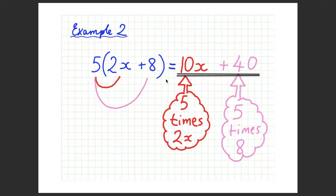Okay, so here's another example, 5 times brackets 2x plus 8. So 5 times 2x, I've color coded in red, gives you 10x, and 5 times 8, I've color coded pink, gives you 40. So 5 times 2x plus 8 equals 10x plus 40.